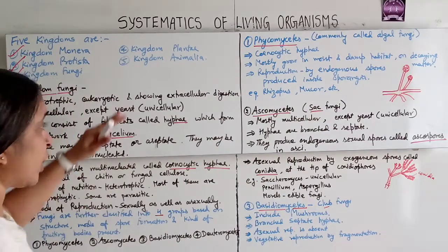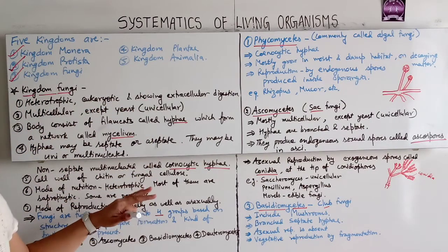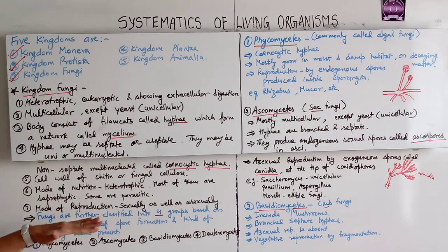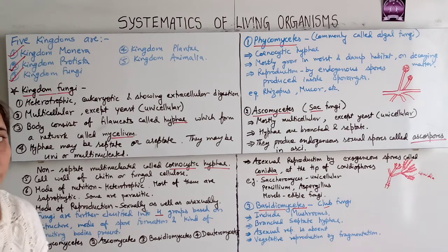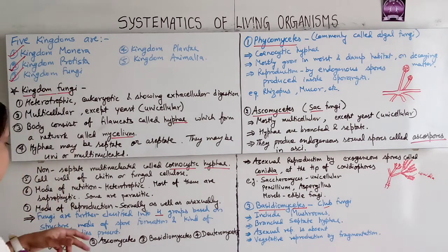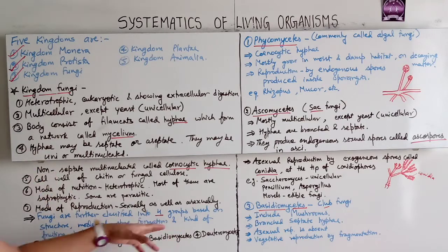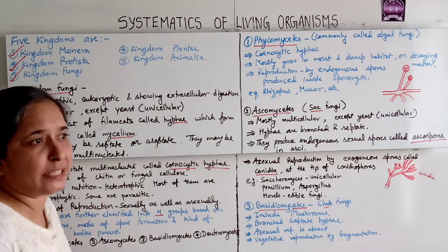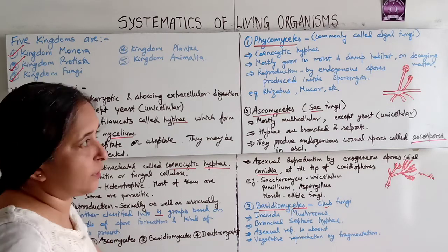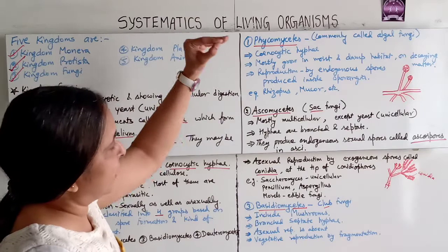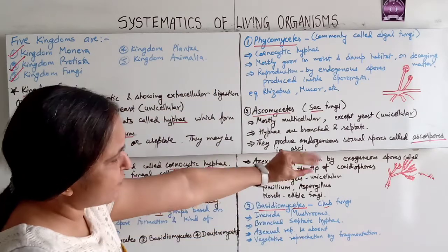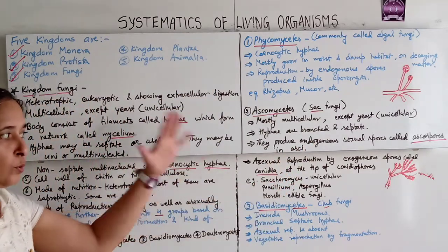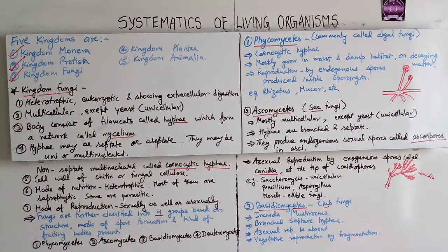So we have studied the general characteristics of Kingdom Fungi and classified fungi into four groups — Phycomycetes, Ascomycetes, Basidiomycetes, and Deuteromycetes — based on structure, mode of spore formation, and kind of fruiting body, with examples and peculiar characteristics. Please go through the diagrams as they are very important.